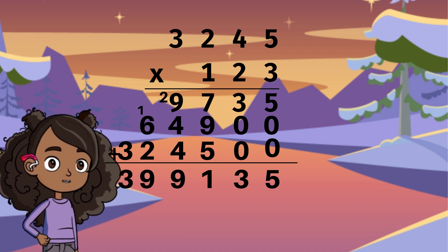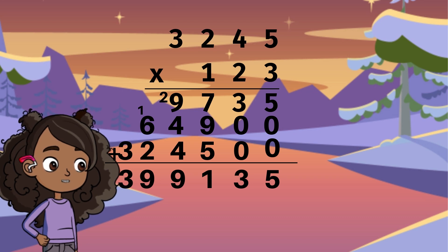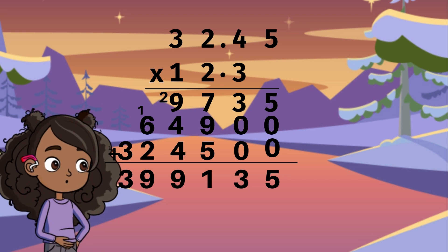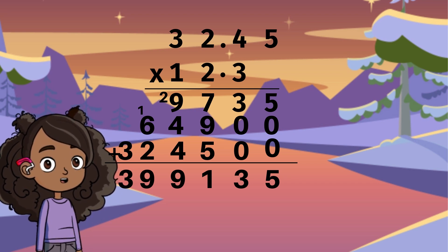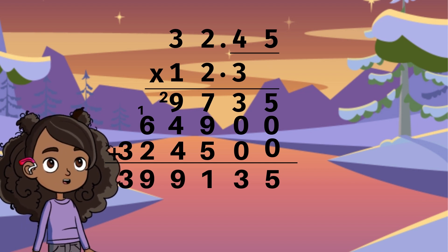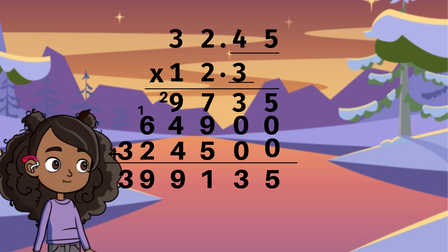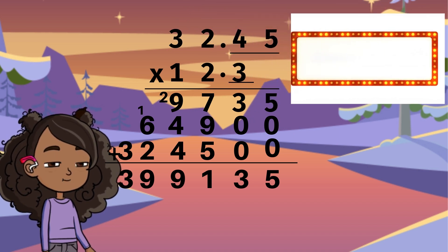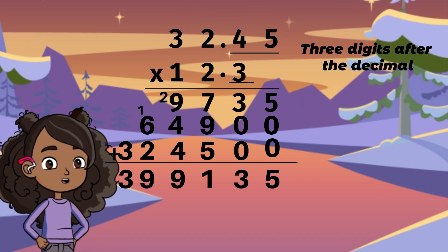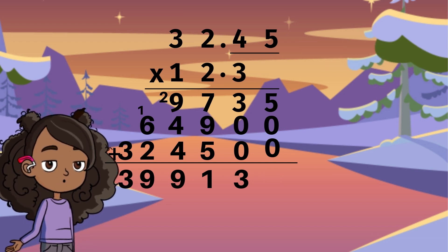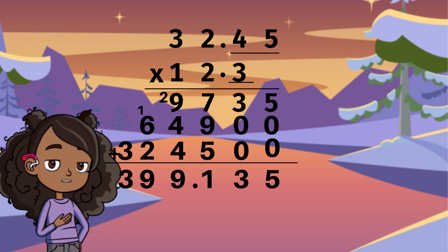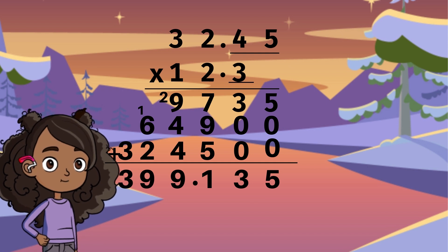Now for your answer, your next step is to put back your decimals. 32 and 45 hundredths has 2 digits after the decimal. 12 and 3 tenths has 1 digit after the decimal. In total there are 3 digits after the decimal. So you are going to go down to your answer row and count 1, 2, 3. Your product is 399 and 135 thousandths.